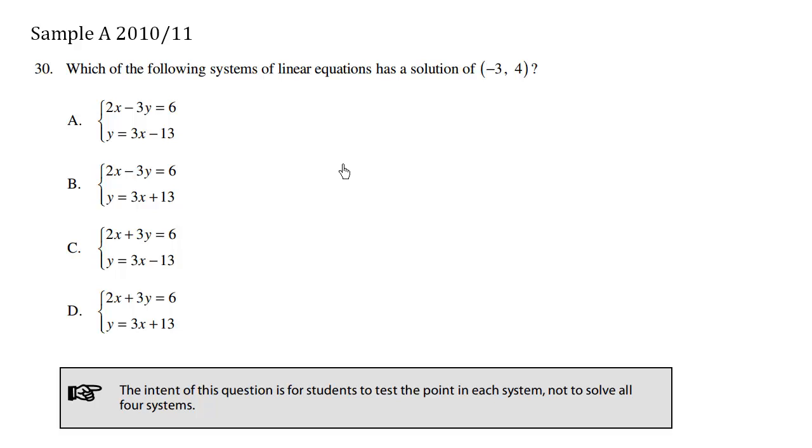Which of the following systems of linear equations has a solution of (-3, 4)? So I like this little tip here. The intent of this question is for students to test the point in each system, not to solve all four systems.